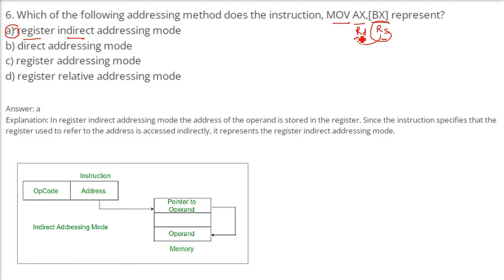There is also indirect addressing mode. In indirect addressing mode, you won't have the data directly — you will have the address of the data. The difference is that register indirect uses a register to hold the address, while indirect addressing mode stores the address in memory.